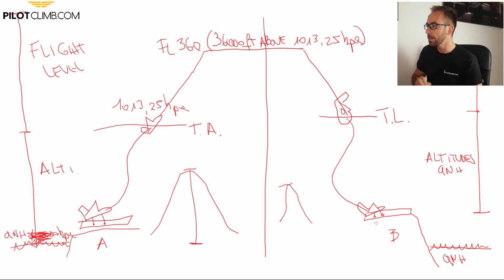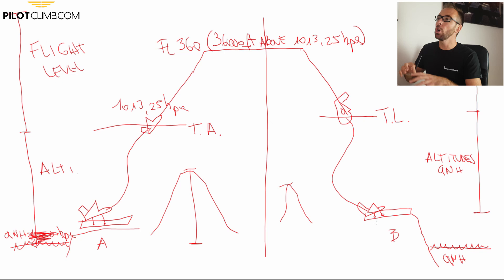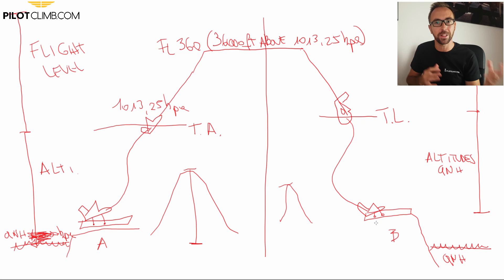I hope it's now a little clearer which altimeter setting to use when flying from A to B. This was an overview — I've made separate videos explaining transition altitude, transition level, QNH, QFE, QNE, and 1013 in more detail; I'll try to put the links below. If you have any questions, leave a comment and I'll be happy to answer. Also visit pilotclimb.com where you can subscribe for free pilot training content. I wish you a great day and I'll see you in the next one.